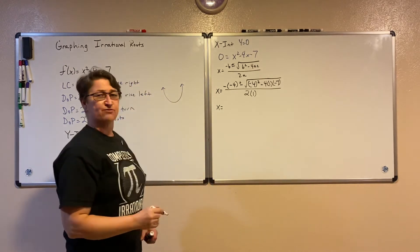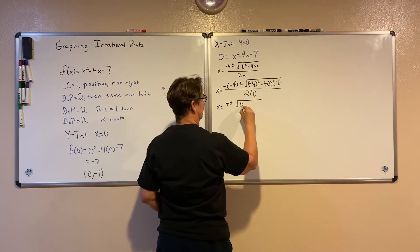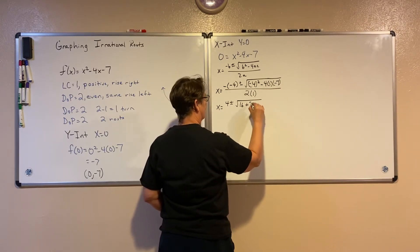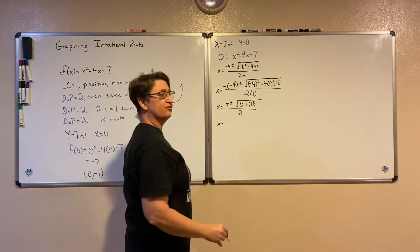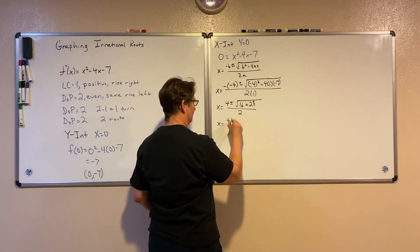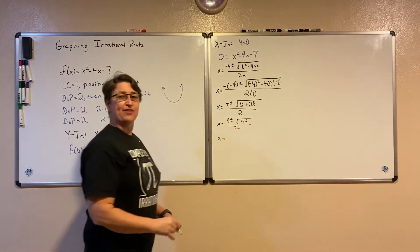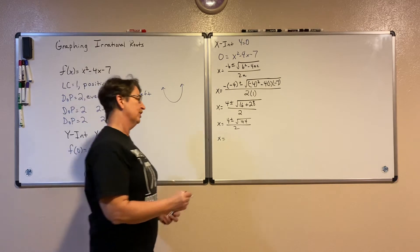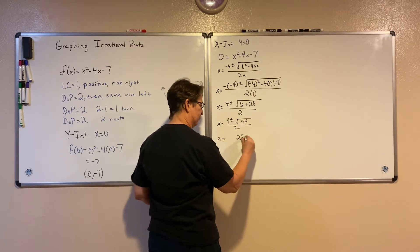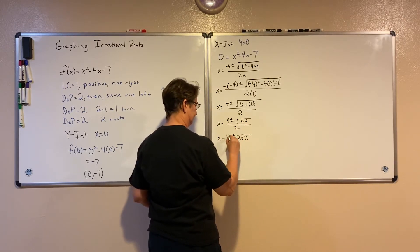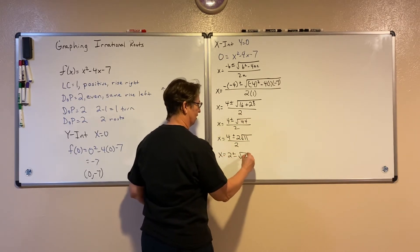Then I just simplify. A negative times a negative makes that a positive. Plus or minus the square root of 16, and negative times a negative makes that a positive 28, all over 2. 16 plus 28 gives me 44, over 2. If I simplify that, 44 is 4 times 11. The square root of 4 is 2, so the square root of 44 simplifies to 2 times the square root of 11. Separating those two, I end up with 2 plus or minus the square root of 11.